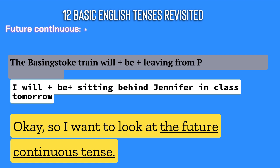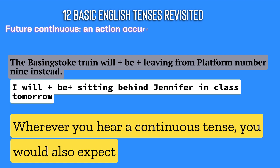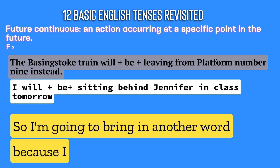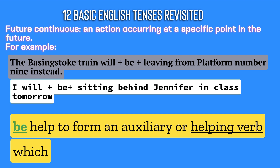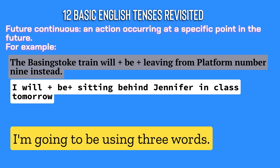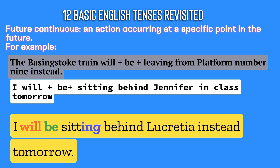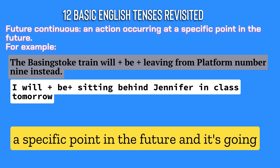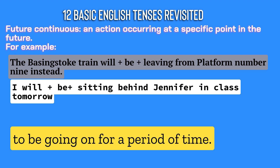I want to look at the future continuous tense. Wherever you hear a continuous tense, you would also expect to find an auxiliary and a word ending in '-ing.' I'm going to bring in another word, because I like to show you how words from the verb 'to be' help to form an auxiliary or helping verb, which is then conjoined with a main verb ending in '-ing.' Please look at the screen — I'm going to be using three words. 'I will be sitting behind Lucretia instead tomorrow.' It describes an action that is going to happen at a specific point in the future and will be going on for a period of time.